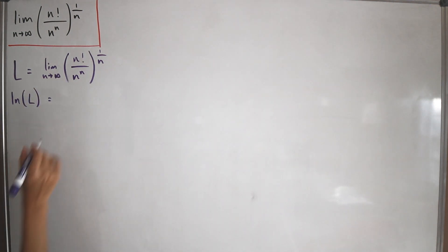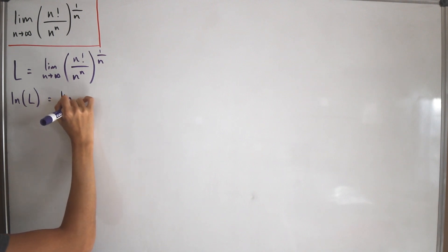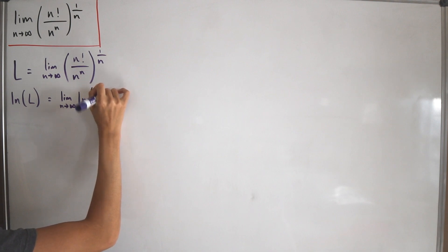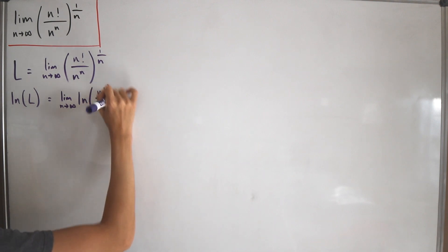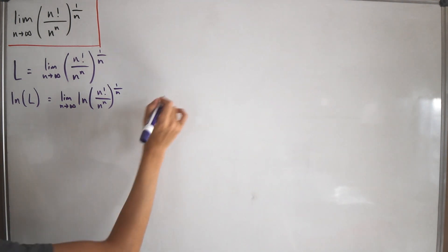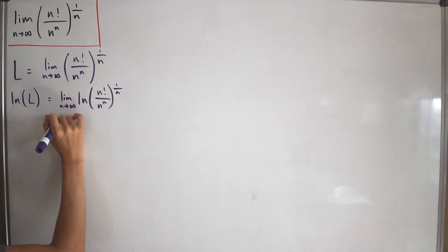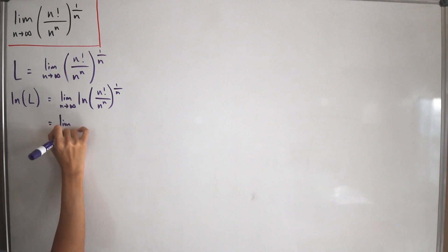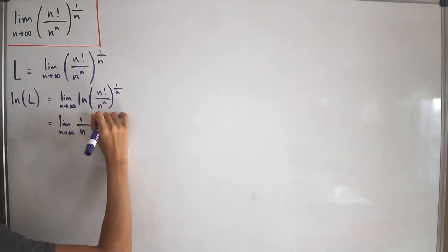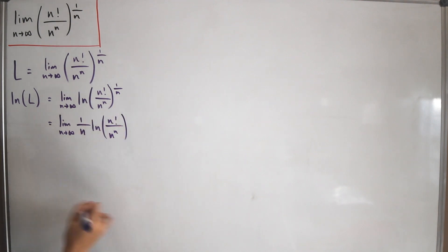With continuity, I can interchange the limit and the natural log: ln(L) equals the limit as n approaches infinity of the natural log of n factorial divided by n to the power n, raised to the power one over n. With log properties, I can move that one over n to the front: the limit as n approaches infinity of one over n times ln of n factorial divided by n to the power n.